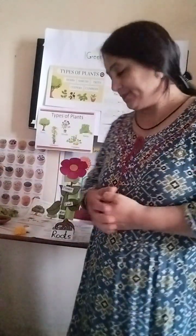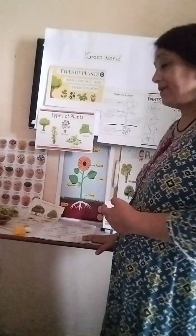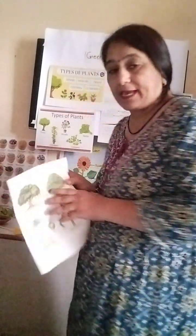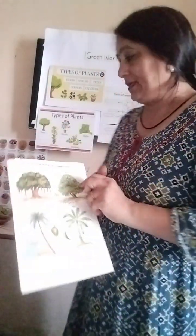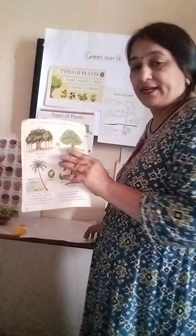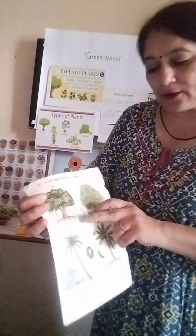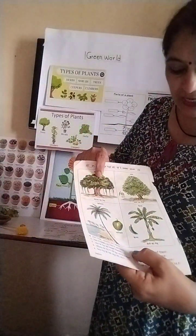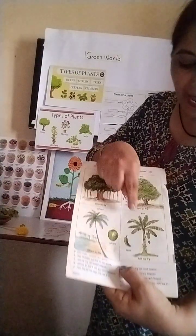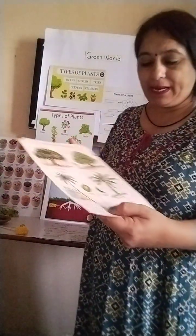Now let's see the different types of plants in depth. Children, there are trees - can you see different types of trees? This is a mango tree, banyan tree, coconut tree, and banana plant. There are different types of trees. They are all tall and they have a thick trunk.